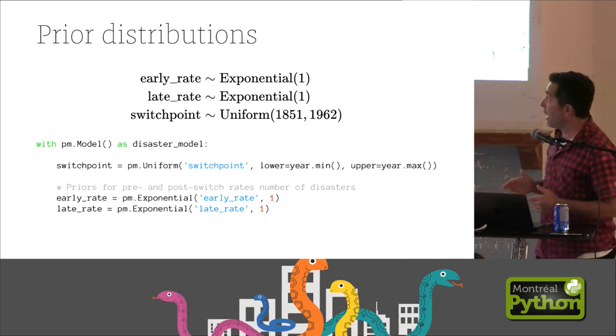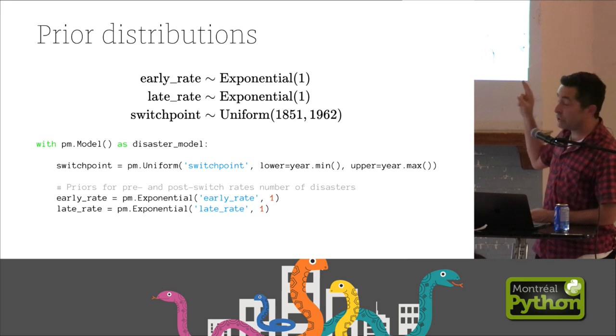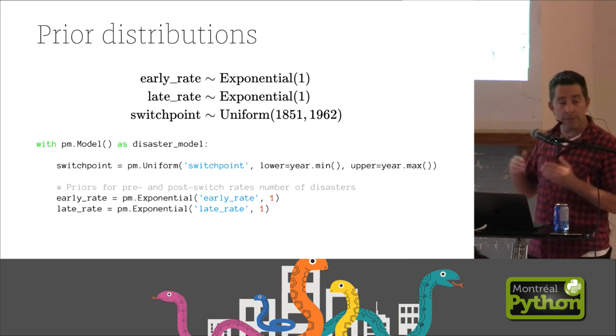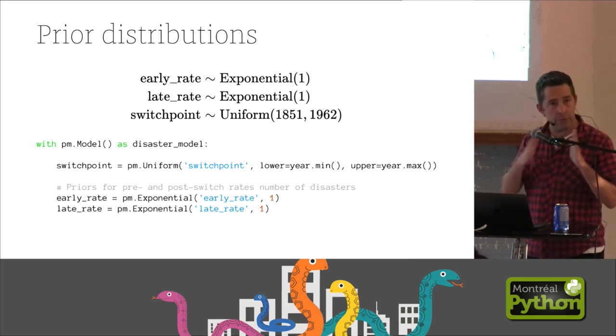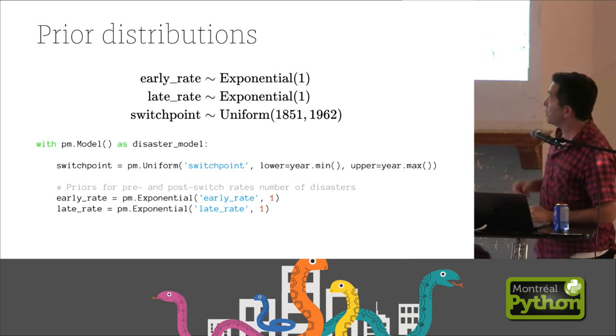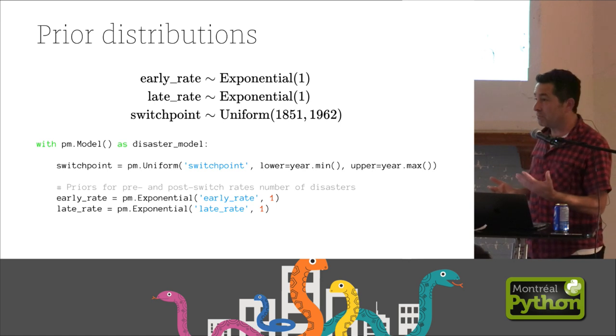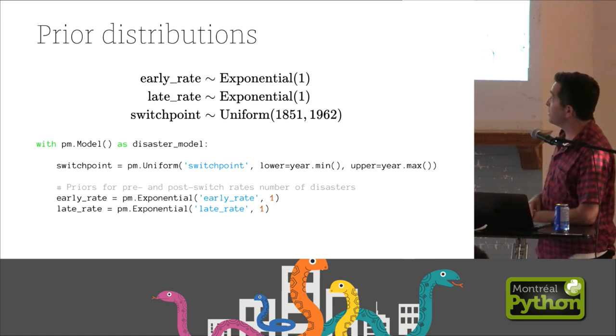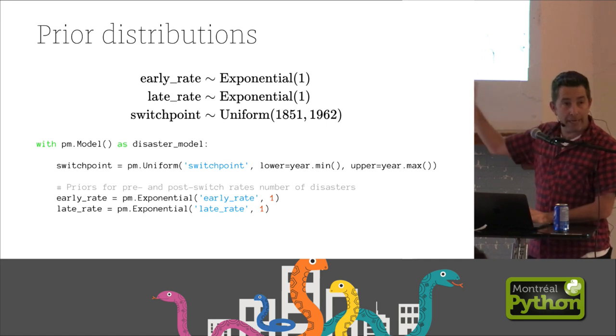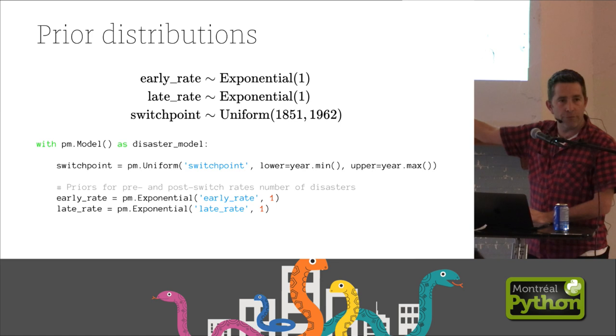So first step, prior distributions. We talked about these before. I'm going to choose exponential distributions for these rates. Why? Because they're positive continuous values. Rates can't be negative, obviously. You can choose other ones. It's always good to test whether you picked good priors. And then switch point, I'm just going to pretend I didn't look at the data. I know it's somewhere in the middle. But we're just going to allow it to be uniform across the time series. It could be anywhere in there.